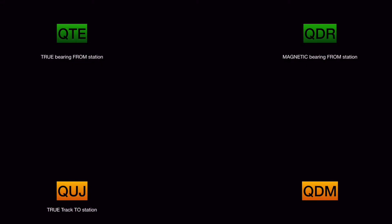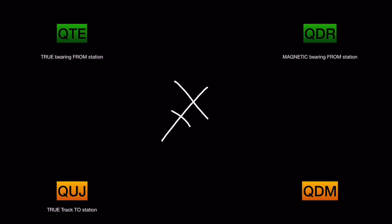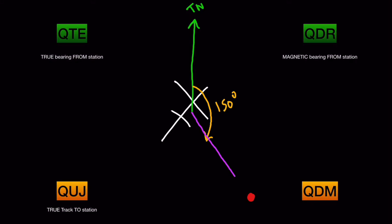QUJ is the aircraft's true track to the station. Earlier we talked about bearings from the station; now we're talking about to the station. The ATC gives the track in degrees true which, if flown by the pilot, would take it to the station. For example, a QUJ of 150 degrees means that if the pilot flies a track of 150 degrees true — 150 degrees from true north — the aircraft will reach the station.